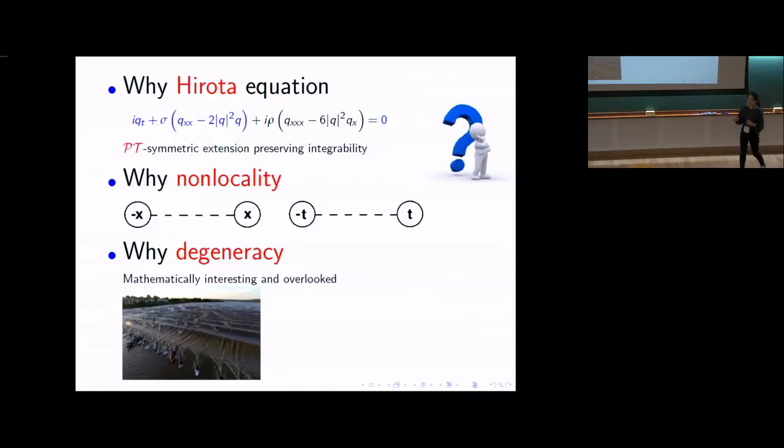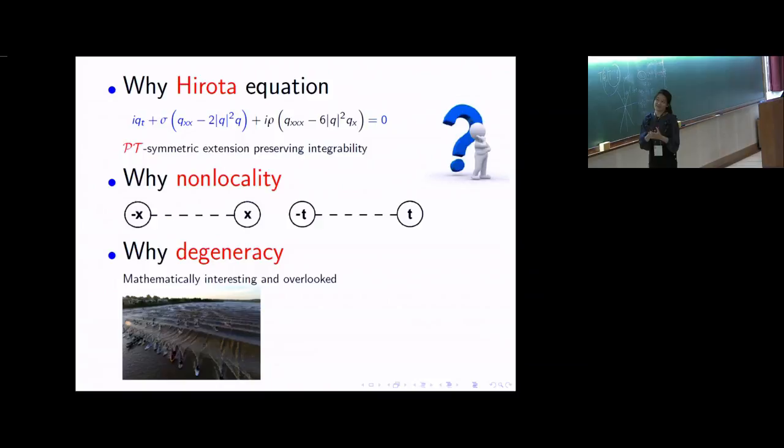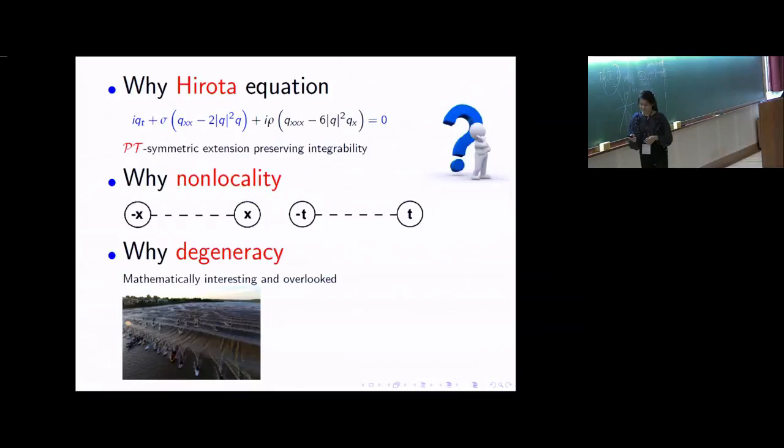What is non-degeneracy, you may ask? Non-degeneracy is when you have a multi-soliton with peaks of different speed, amplitudes, and energy.